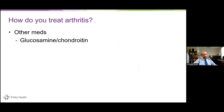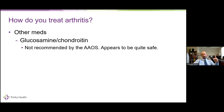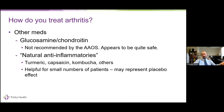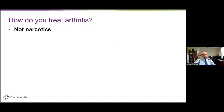Other medications commonly asked about include glucosamine chondroitin. It's not recommended by the American Academy of Orthopedic Surgery, though it is quite safe and generally fairly inexpensive. Natural anti-inflammatories such as turmeric, capsaicin, kombucha, and others — in the studies it's tough to say if this is a placebo effect or not, but it is fairly safe for most people.